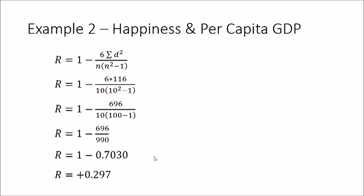A value of plus 0.297 is actually a weak correlation. So even though these countries have different happiness rankings and per capita GDP values, there is not a strong correlation. The country with the highest per capita GDP is not necessarily the happiest. There is some relationship between money and happiness, but happiness does not depend on money alone. This shows how rank correlation can identify relationships between parameters that we cannot measure numerically but can rank.